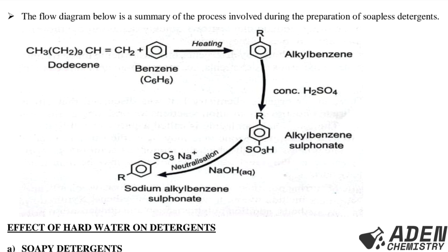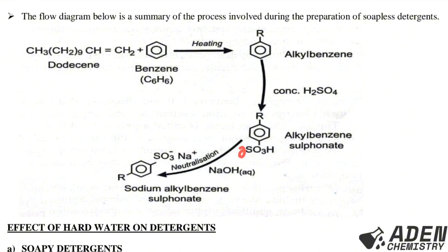The summary diagram shows: Step 1 — alkene reacts with benzene at heat to give alkyl benzene (written as R–benzene). Step 2 — alkyl benzene is treated with concentrated sulfuric acid to give alkyl benzene sulfonate. Step 3 — alkyl benzene sulfonate is hydrolyzed with sodium hydroxide in a neutralization reaction to give sodium alkyl benzene sulfonate, which is our soapless detergent.